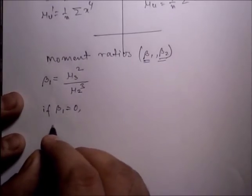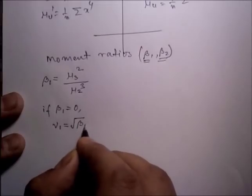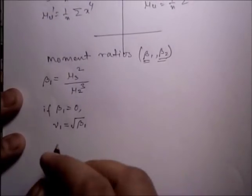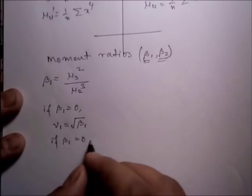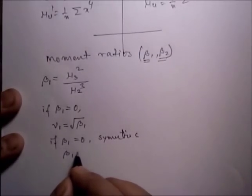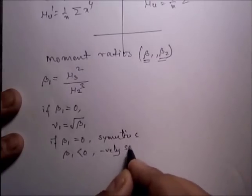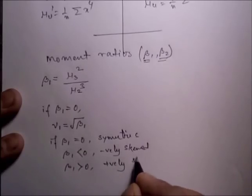We have one more parameter gamma_1, which is nothing but the square root of beta_1. If beta_1 equals 0, the distribution is symmetric. If beta_1 is less than 0, it is negatively skewed. If beta_1 is greater than 0, it is positively skewed.